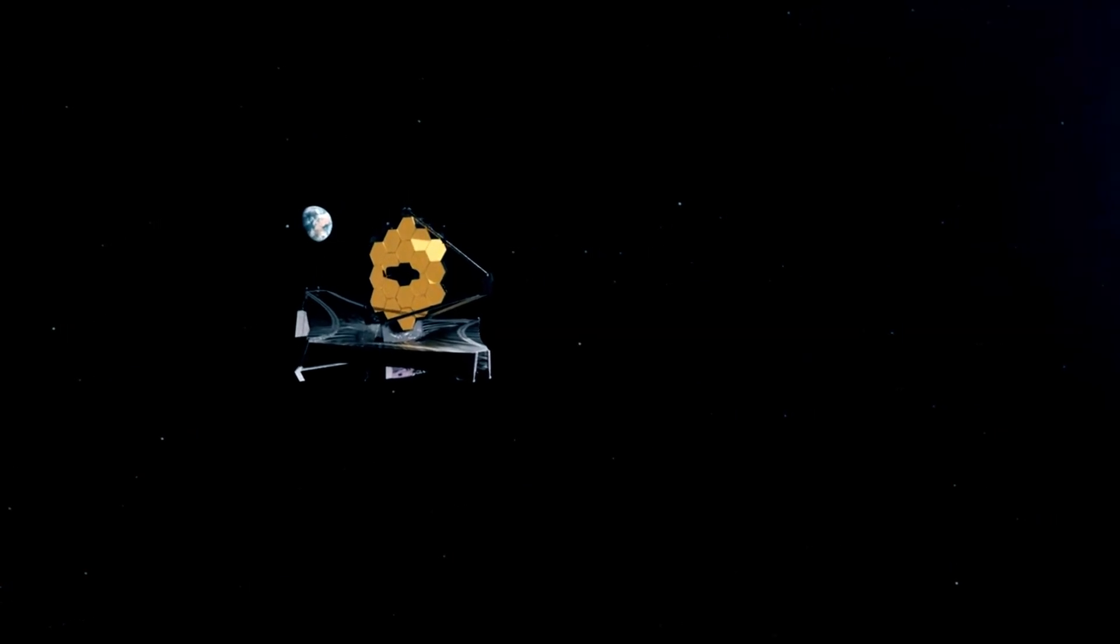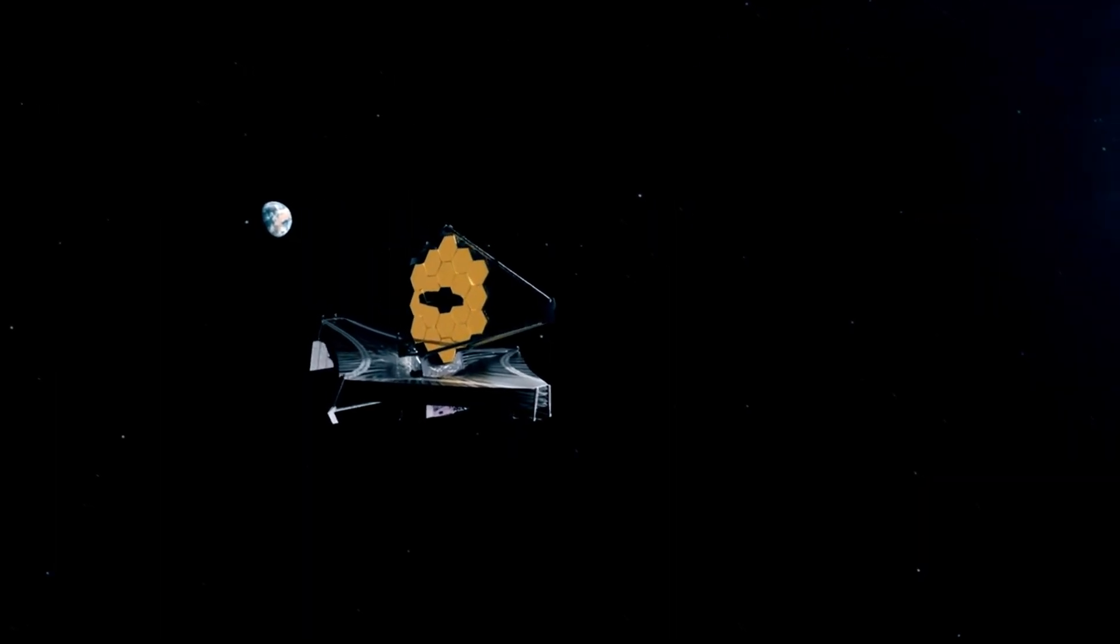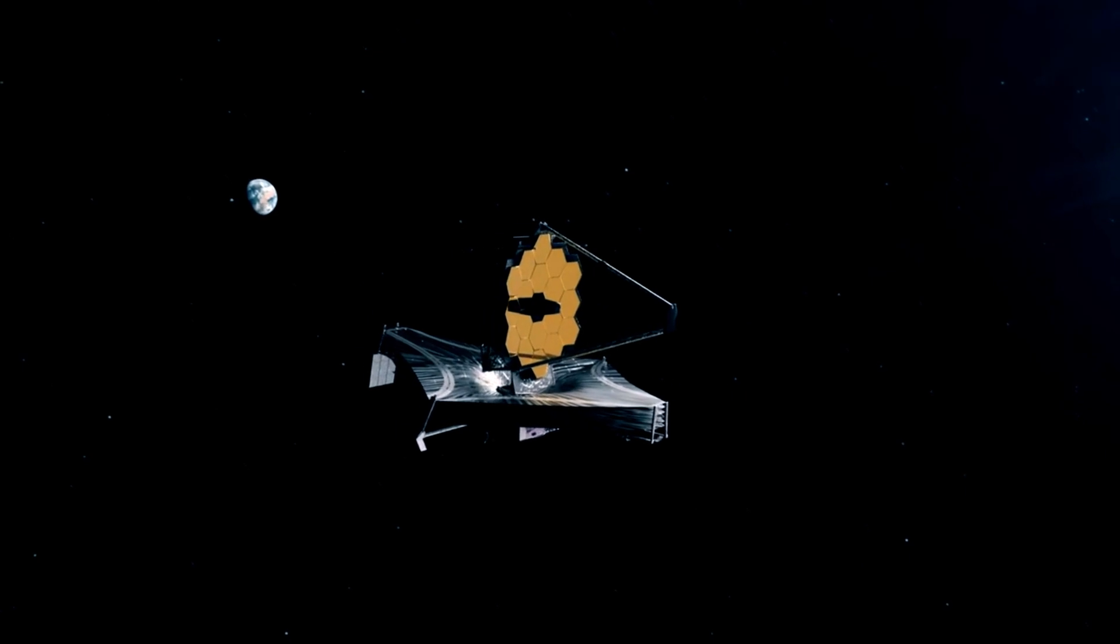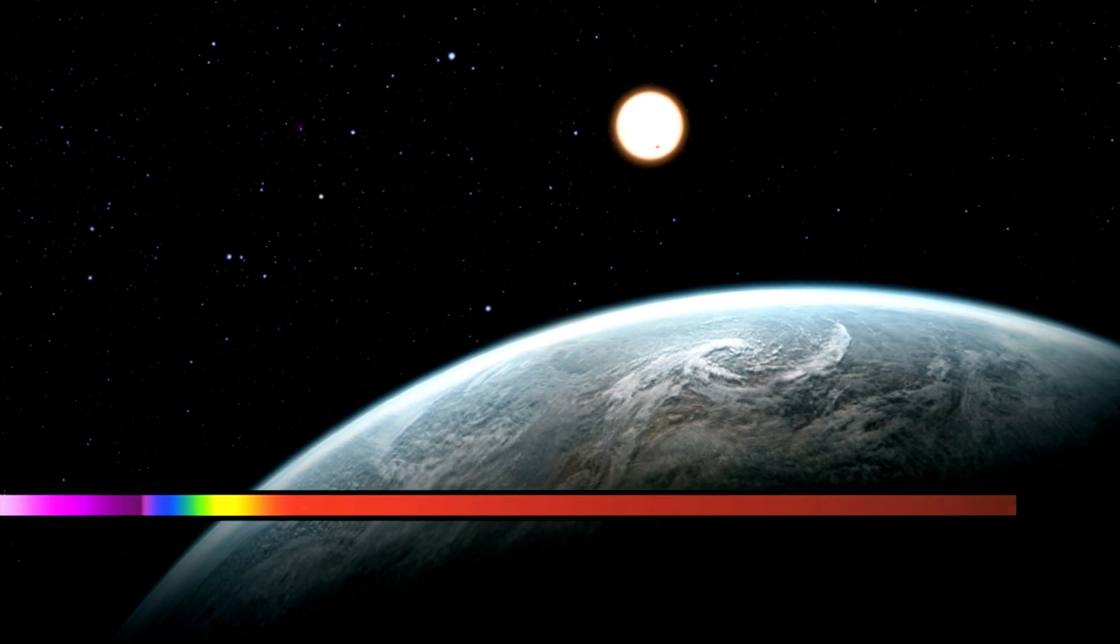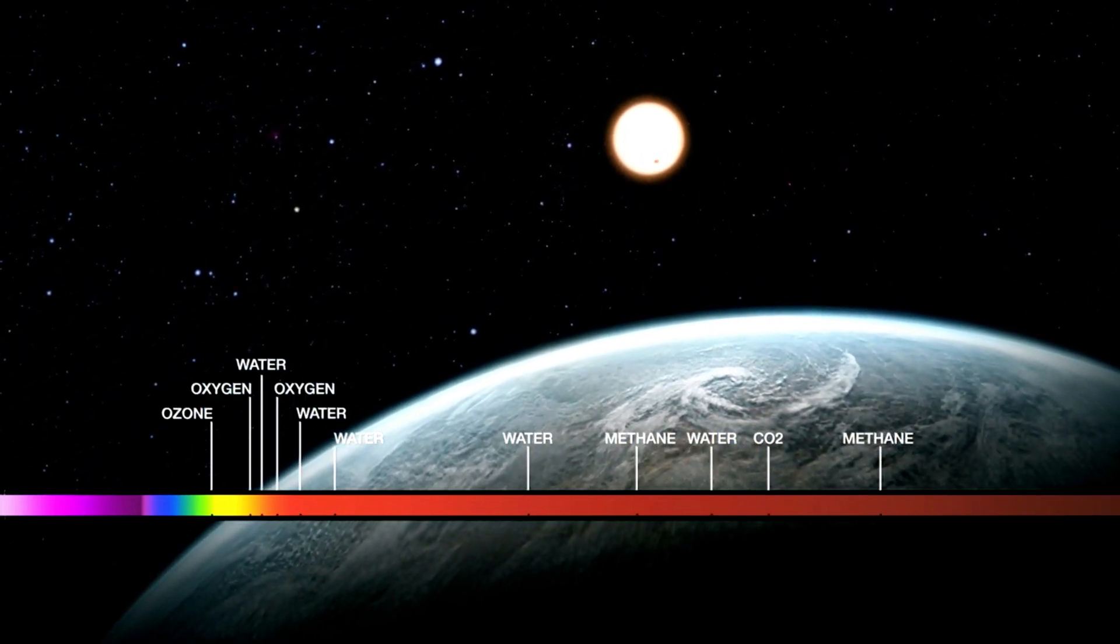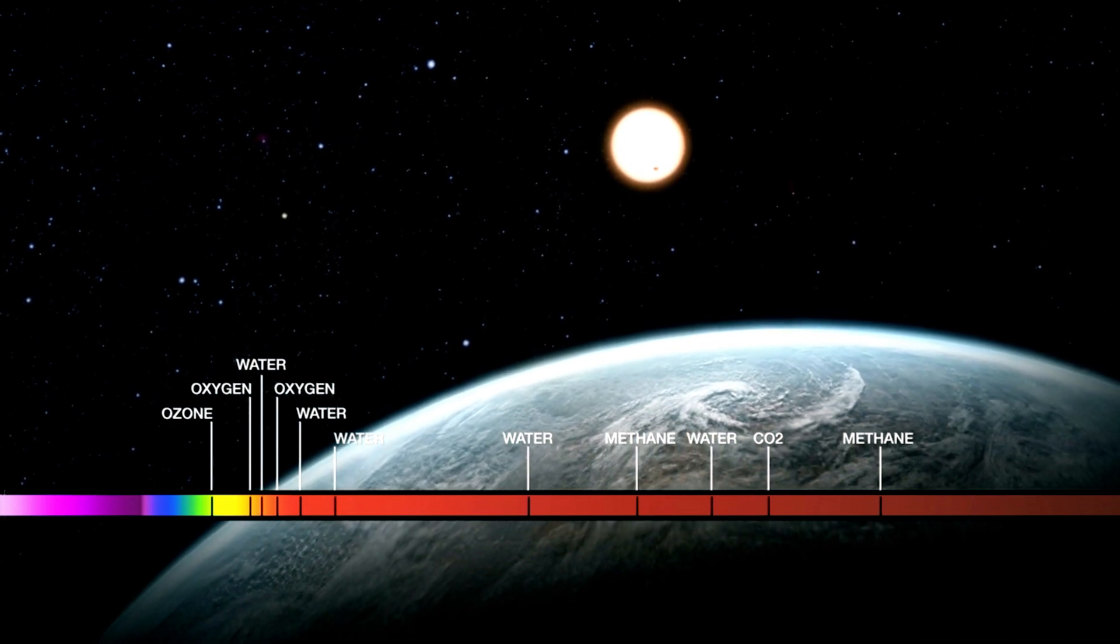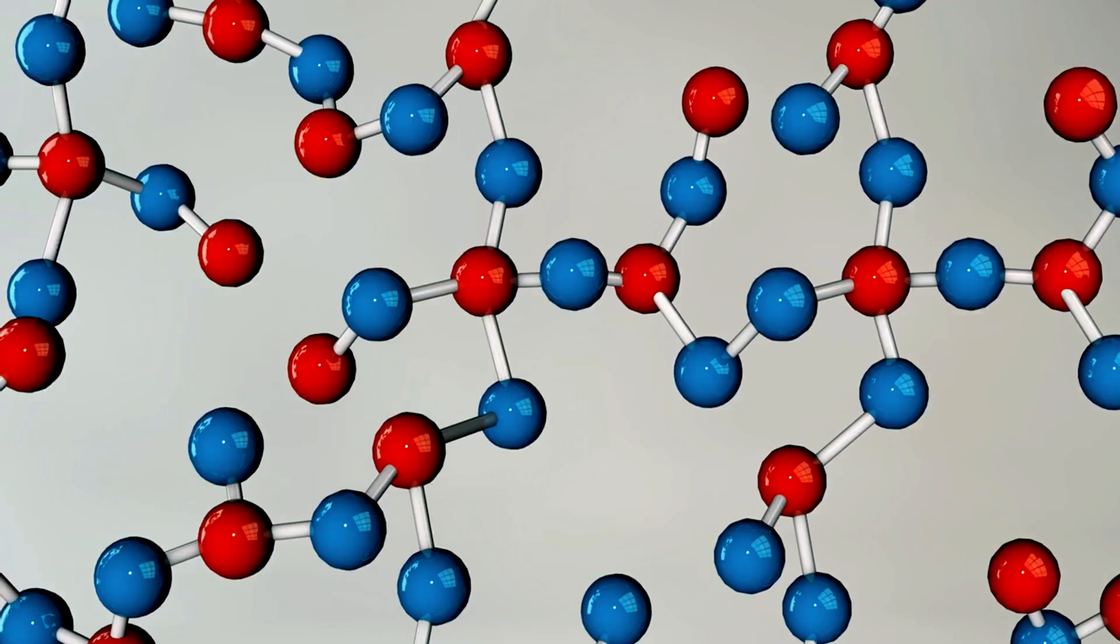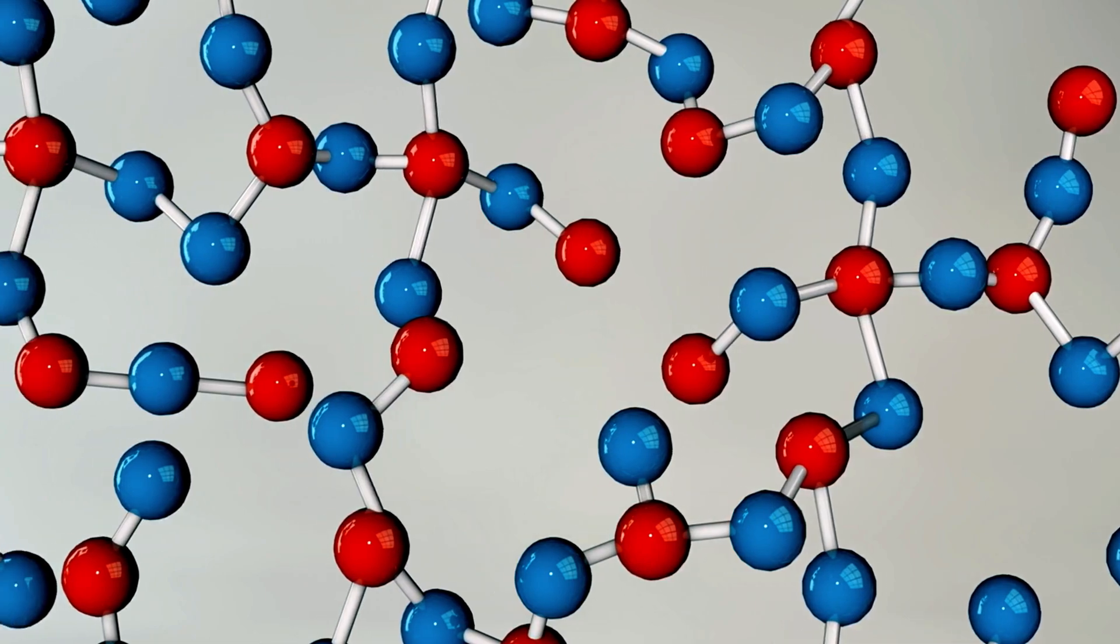As future missions like the James Webb Space Telescope and extremely large telescopes come online, we will be able to characterize the atmospheres of exoplanets with unprecedented precision. By analyzing spectrographic data from these planetary atmospheres, scientists could one day detect chemical indications of life from afar called biosignatures. Such an astounding discovery may come sooner than we realize.